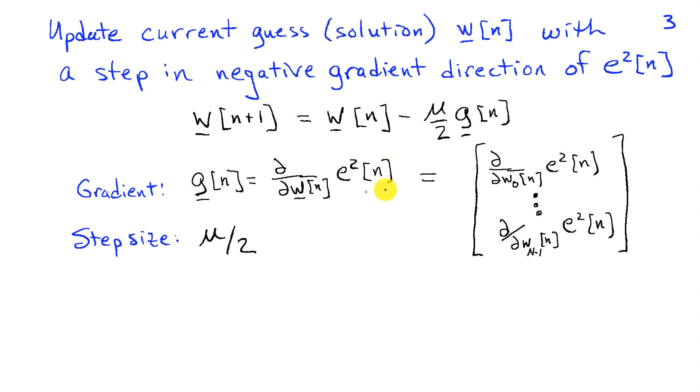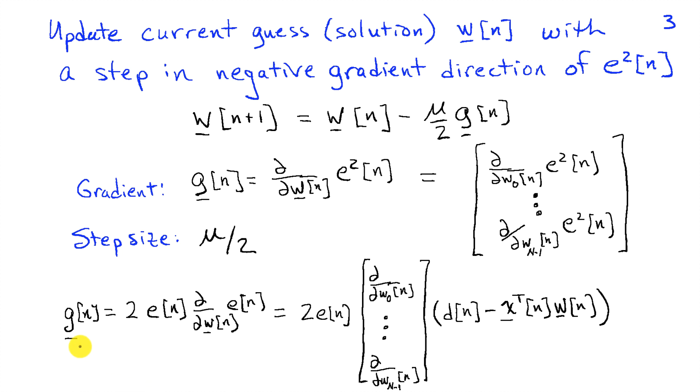This looks maybe a little intimidating, but all it means is that we're forming a vector by taking the partial with respect to each of the components of w. So the first element of this gradient vector is going to have the partial with respect to w0 of e squared, then the partial with respect to w1 of e squared, and then finally the partial with respect to w sub n minus 1 of e squared. So let's look at finding this gradient. We can use the chain rule and take the derivative with respect to e squared and write that as 2 times e of n times the derivative of e of n.